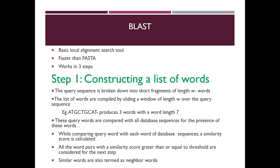Step 1 of BLAST is constructing a list of words. The query sequence which needs to be searched against the database is broken down into short fragments of a fixed length W. These short fragments are called words. The list of words is compiled by sliding a window of length W over the query sequence. For example, if you take a sequence of nine characters and the fixed length W is 7, that produces three words.